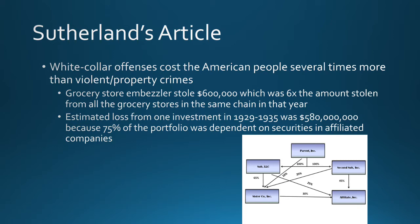There's an estimated loss from one investment right before the stock market crash of 1929 to 1935 of about $580 million. That's because 75% of the portfolio was dependent on securities in affiliated companies. The parent company does business with subsidiaries it owns. If the parent company goes out of business, all of those other companies also go out of business, and that's a huge problem for portfolios. You think you have a diversified stock investment portfolio with five different companies, but if one goes out of business, it could completely crash your entire portfolio.